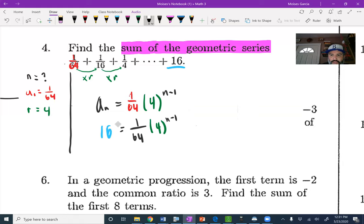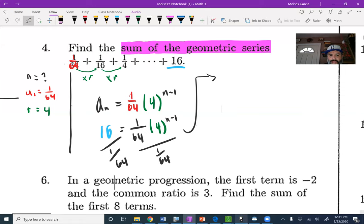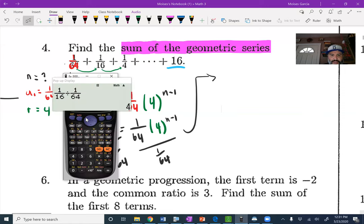I talked about this in the first video, but what you can do here is convert into a log. Before you do that, you actually have to isolate the base and the power here. So you isolate the base and power by dividing that 1 over 64, or actually multiplying it by 64.